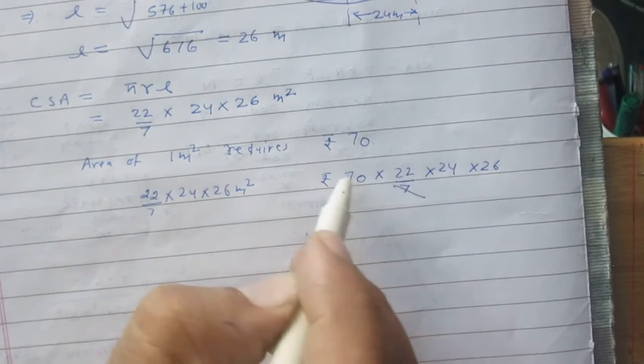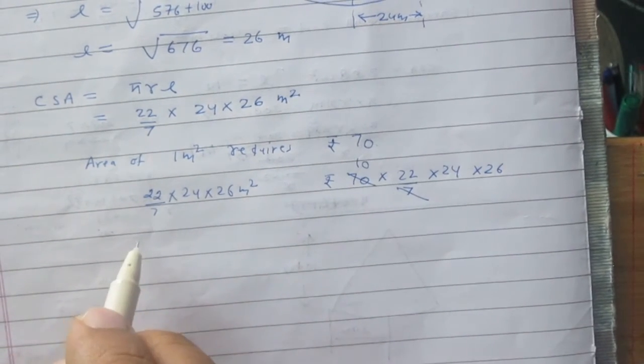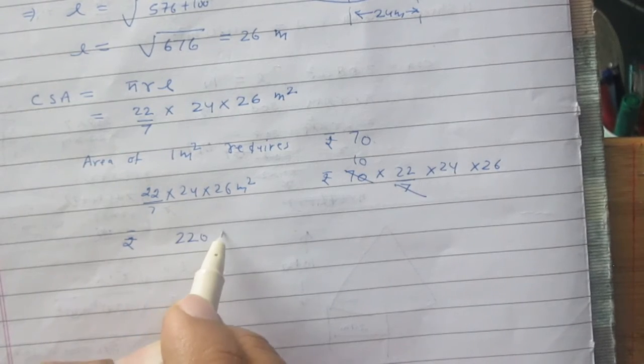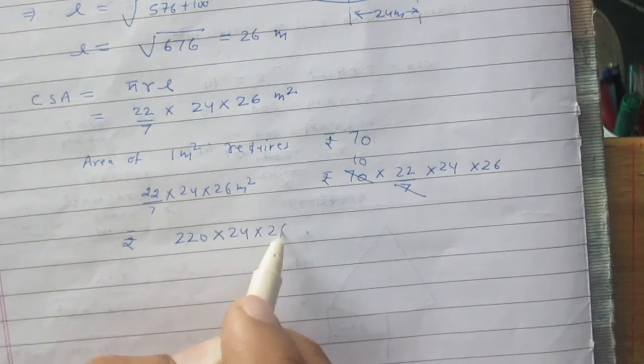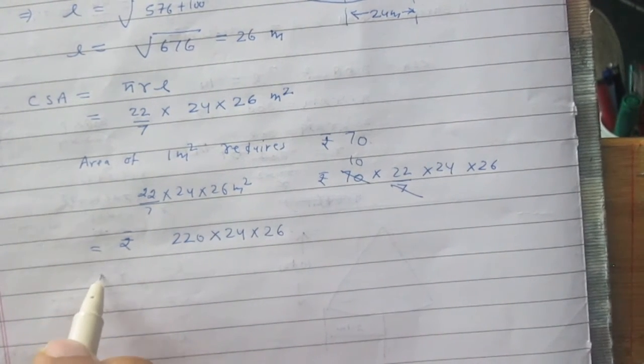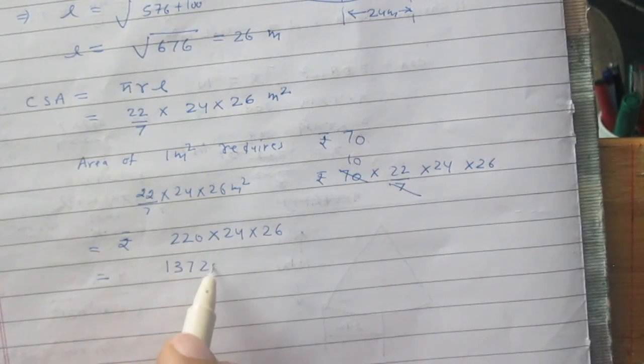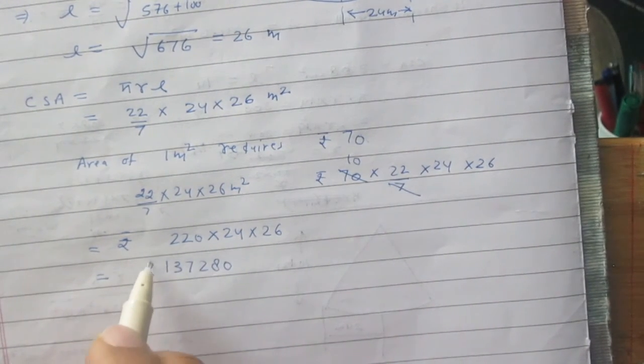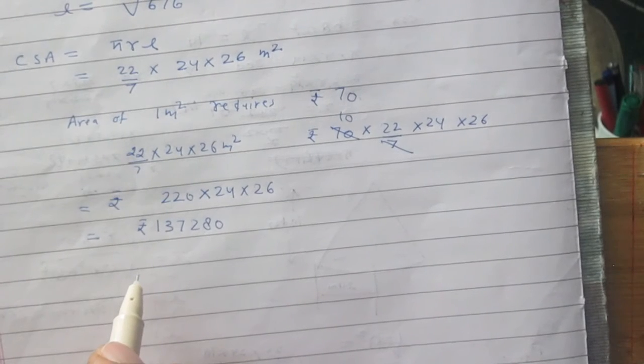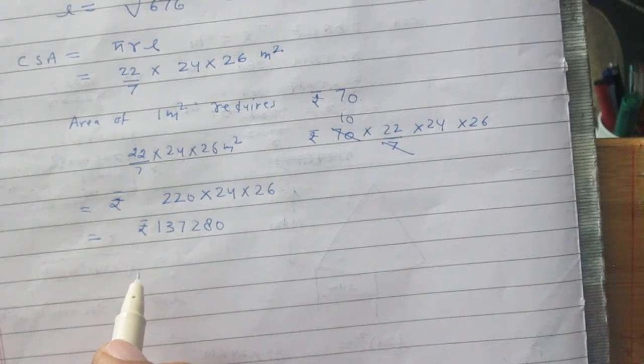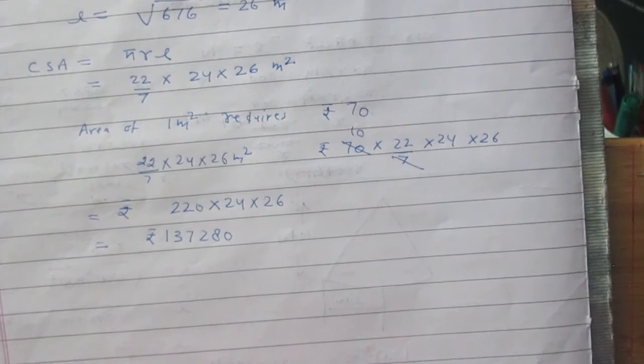So we can calculate it. It is rupees 220 into 24 into 26. After calculation you will get 137,280. So you can say that the cost of canvas required is 1,37,280 rupees.